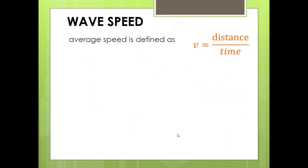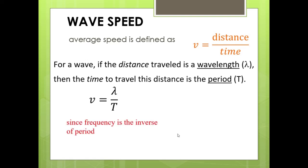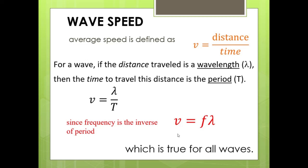Another concept is wave speed. Speed is distance over time. For a wave, the distance is the wavelength, and the time it takes a wave to travel that wavelength is known as the period — the inverse of the frequency. So wave speed equals wavelength divided by period. Since frequency is the inverse of period, wave speed equals frequency times wavelength. This is the basic wave equation, and it is true for all waves.